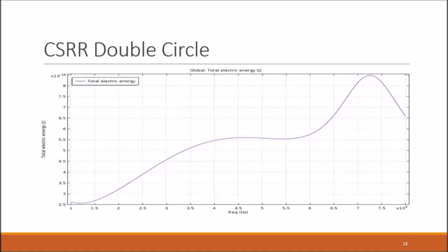Here we can see the final graph of total electrical energy output versus frequency for the double circle complementary split ring resonator.